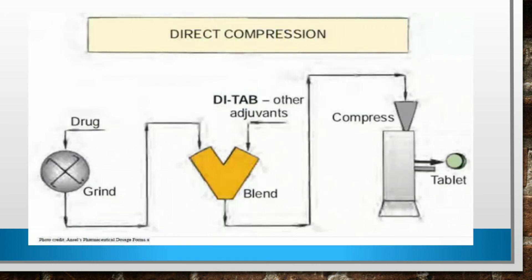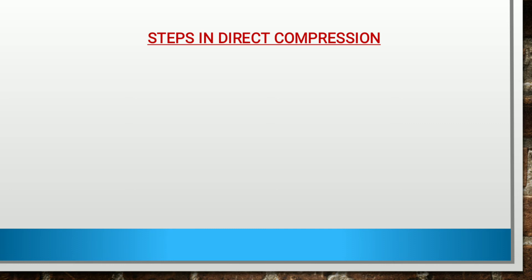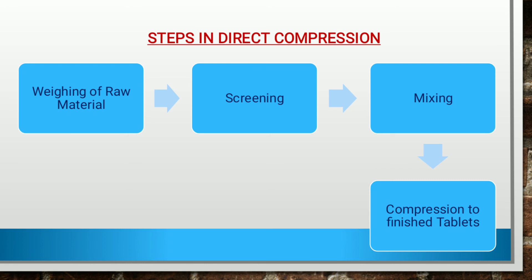Here is the diagrammatic representation of steps involved in direct compression. The first step is grinding of your drug, then blending or mixing of drug with adjuncts, then compression, and finally a finished tablet. The steps involved in direct compression include: weighing of raw material, then screening or milling of formulation ingredients — i.e., active drug substances and excipients — then mixing the active drug substances with powder excipients including lubricant, and finally compressing the mixed powder into tablet.